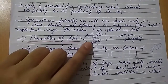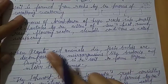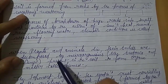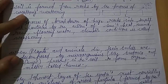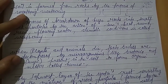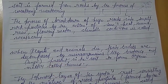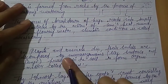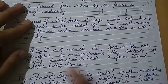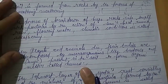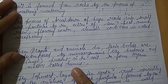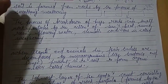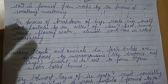Humus is formed when plants and animals die and their bodies are decomposed. Decomposed means the bodies of dead plants and animals are converted into their smallest parts. This process of decomposition is carried out by microorganisms like bacteria and fungi present in the soil to form organic matter called humus.